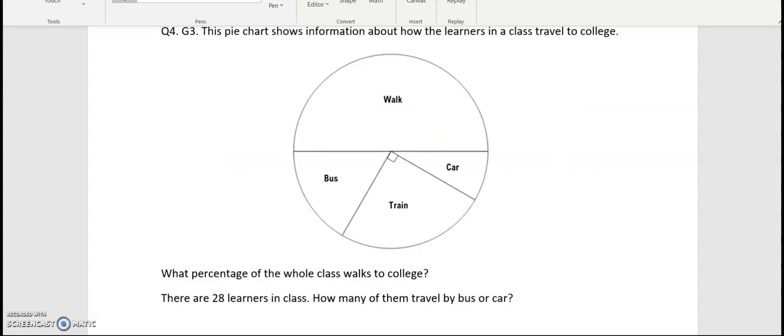Question number 4. This pie chart shows information about how the learners in a class travel to college. What percentage of the whole class walks to college? So we have walk which is half. So that is this one here. As you can see it's half of the circle. So that is 50%.